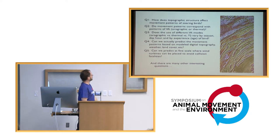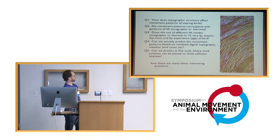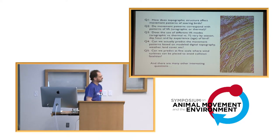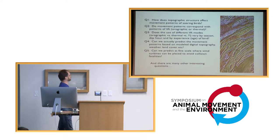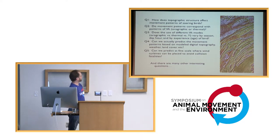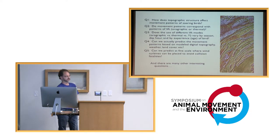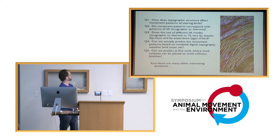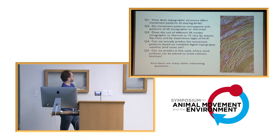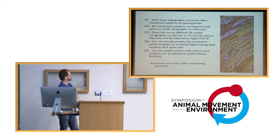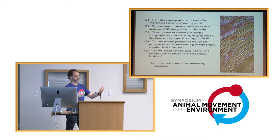I've listed some research questions here. How does topographic structure affect movement patterns? Do movement patterns correspond with patterns of lift for soaring species? Does the use of different mechanisms vary with topography, time, season, day, hour, or experience? We already saw from earlier talks that it certainly varies with experience, and that's consistent with what we see for golden eagles. Can we predict movement patterns based on modeled lift and topography?